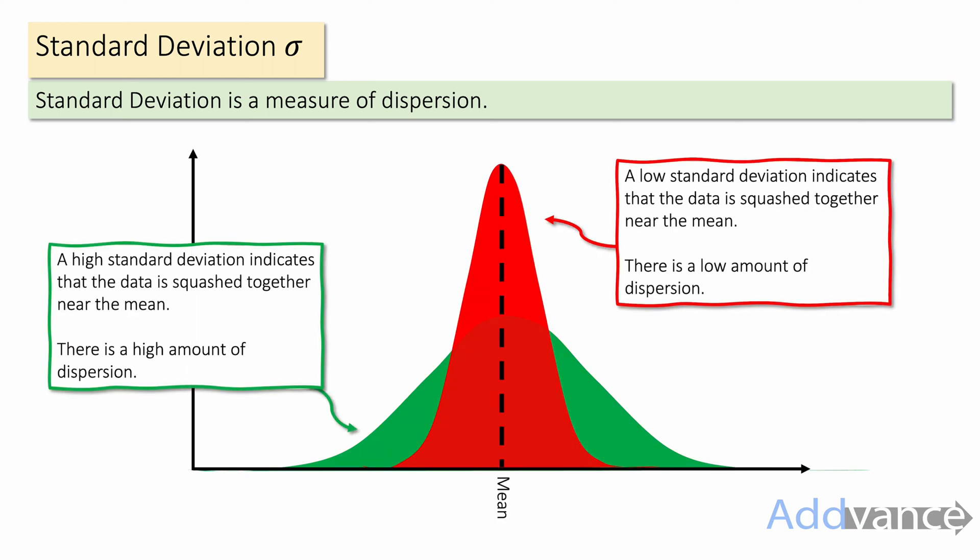Here we have a low standard deviation in red and a high standard deviation in green. The data set in green has a high amount of dispersion — it is very spread out — whereas the red data set with a lower standard deviation is less spread out. This is how you measure spread using statistics.